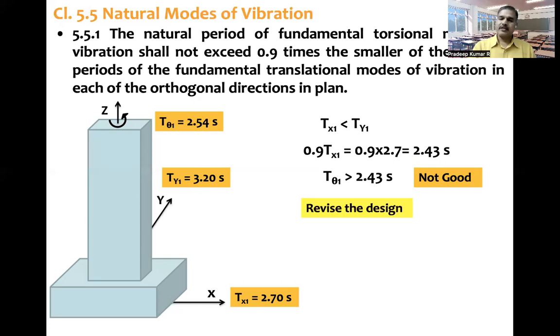So by revising the design, structure is made little more stiffer. So 2.7 seconds in x direction is reduced to 2.55 seconds. Maybe by adding bracings or structural walls or some treatment is done. And then along x direction structure is made more stiffer. Thereby what happens is if structure is made more stiffer along one direction, it is not affecting the other direction, but it affects the torsion direction.